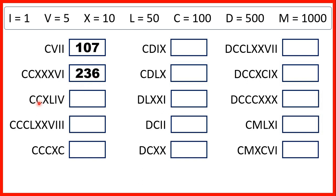Now we have CC, so that's 200. We have X before L, so that's 10 before 50, which is 40. And we have I before V, so that's 1 before 5, which is 4. So our number is 244.